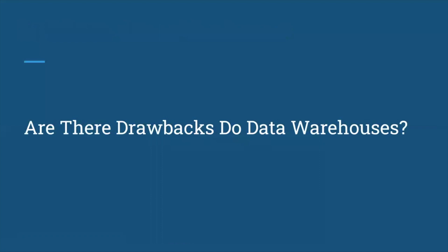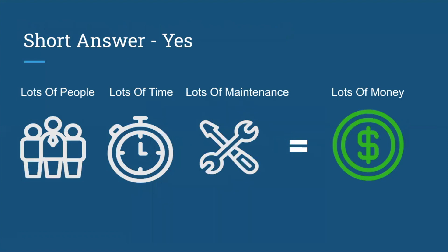Are there drawbacks to a data warehouse? Of course there are. They take lots of people, lots of time, and lots of maintenance, which in the end equals lots of money that companies have to spend building, maintaining, updating, and improving data warehouses. Companies spend probably millions of dollars a year just migrating a data warehouse from an older technology to newer ones, and it takes a lot of special expertise — people who know SQL, automation, ETLs, and many other complex concepts — to build these systems.